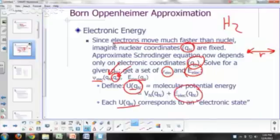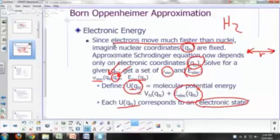So each one of those that you calculate, you get a series of these values, for each set of nuclear coordinates. So each one of those is referred to as an electronic state.